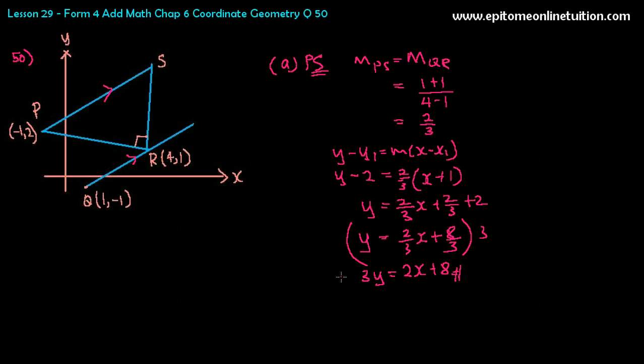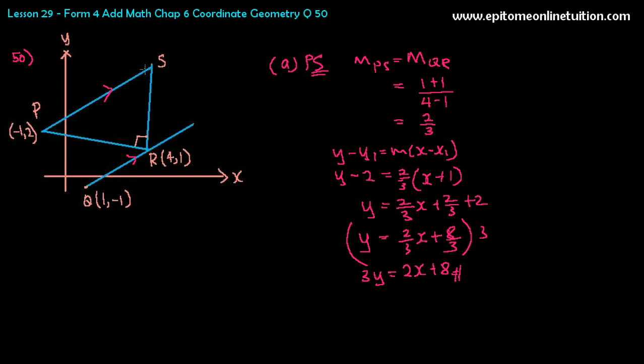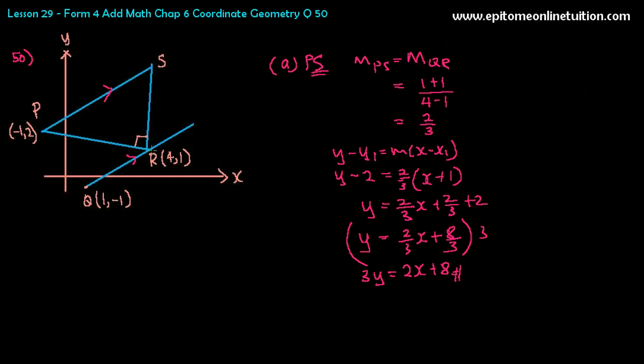So now we're going to find the equation of the line RS. Again, you need gradient and you need a point. So RS passes through point R, which you have here. So that's fine. You have a point. All you need now is the gradient. So RS, how do you find the gradient of RS? Well, can you see that it is perpendicular to PR? So you cannot find it directly, but indirectly you can find it because it is perpendicular to PR.